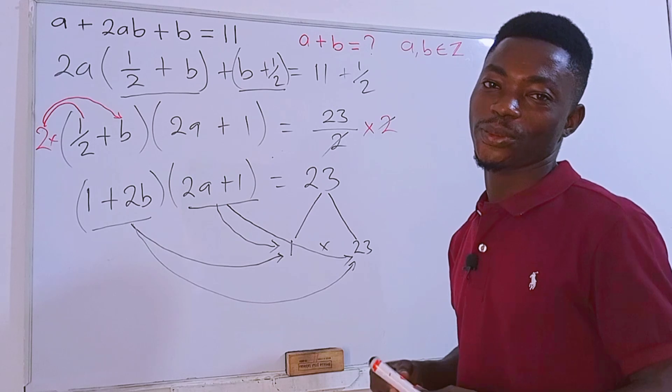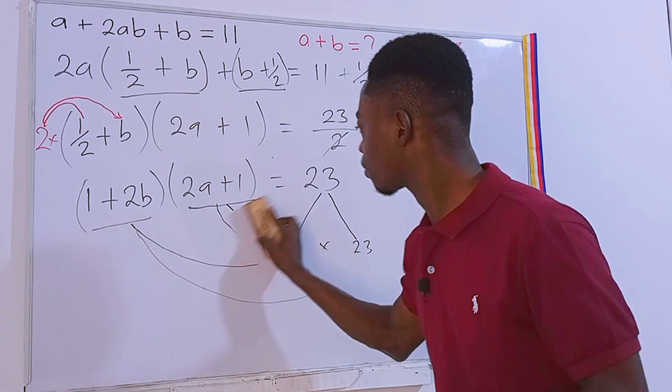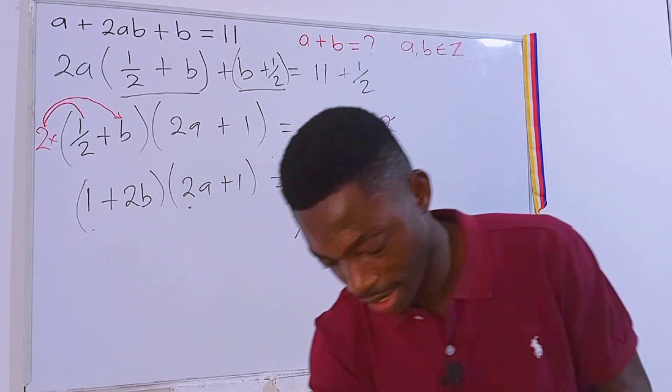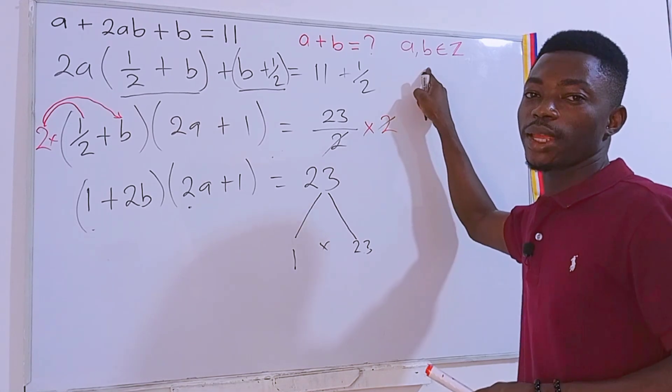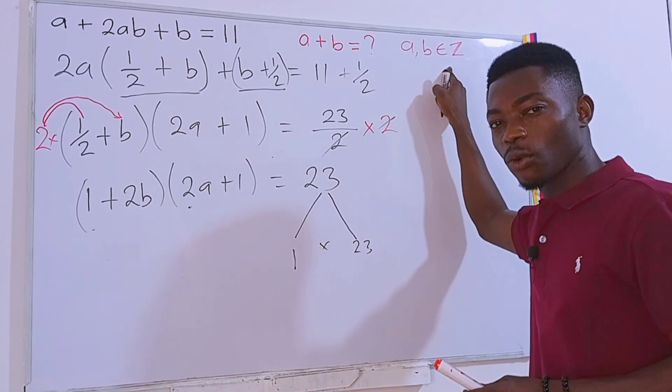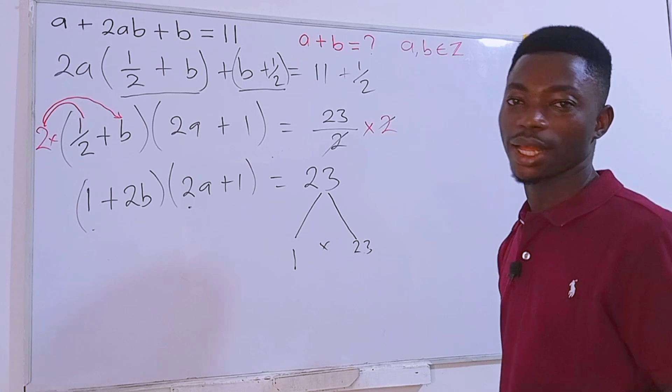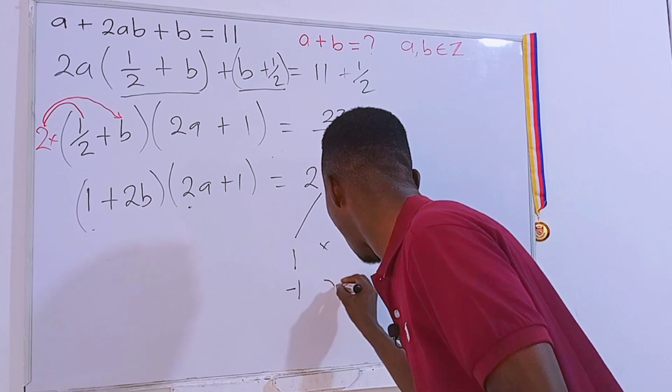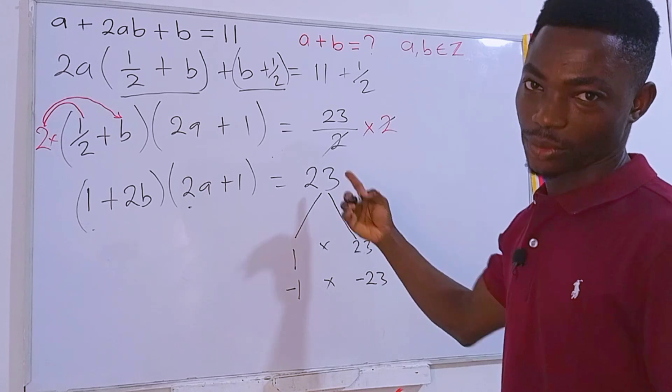So we can form equations out of this. But before that, let's pay attention to something. The question is saying that a and b are all integers. Therefore, it is definite that it is either positive or negative. Therefore, we have to also consider the negative integers as well. So I'm going to put negative 1 times negative 23, which will also give us 23.